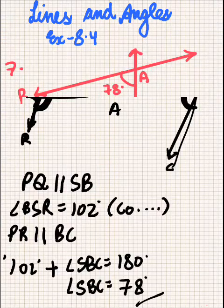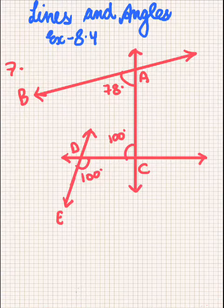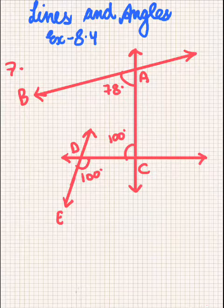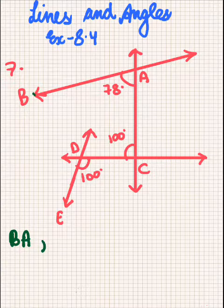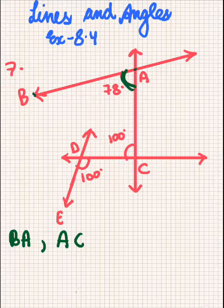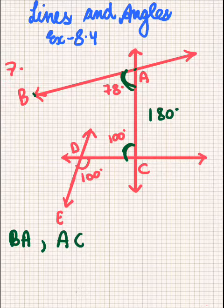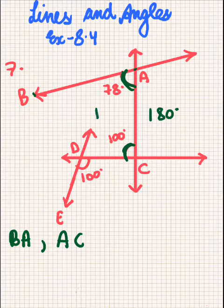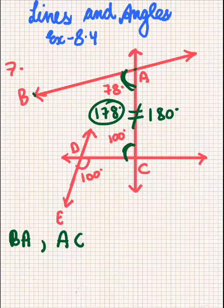Now this is the figure for question 7, in which we have to state which lines are parallel and why. First, we'll check BA and AC. Their angles must sum to 180 degrees for them to be co-interior angles and the lines to be parallel. But if we add them, the sum is 178 degrees, which is not equal to 180 degrees. So these two lines are not parallel.